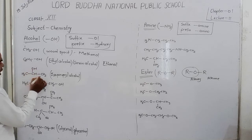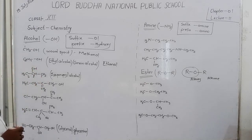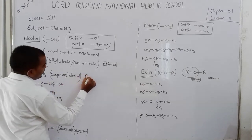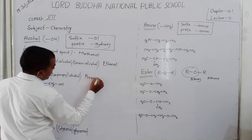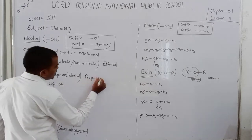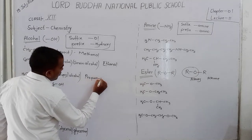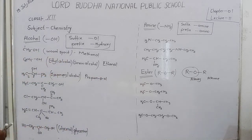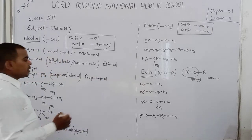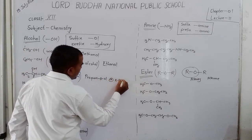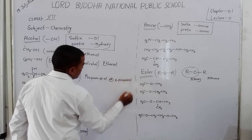Now, the OH group is present at positions 1, 2, 3 — at the second position. So the name of this compound: for 3 carbons we write 'propane', but the OH group is present at the second position. So for OH at position 2, the suffix becomes '2-ol'. The name of this compound is Propan-2-ol, also written as 2-propanol.